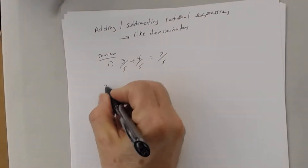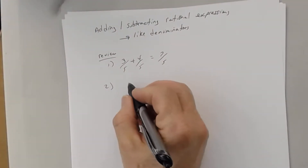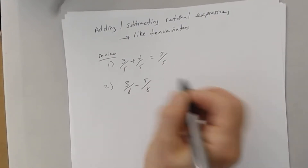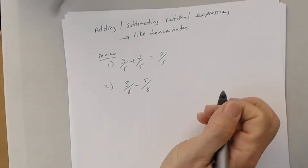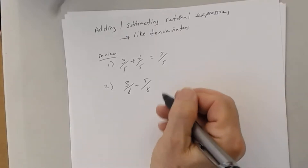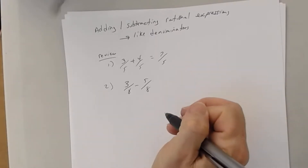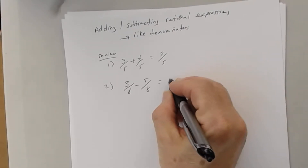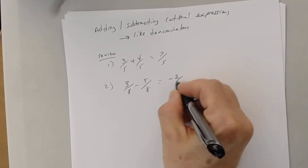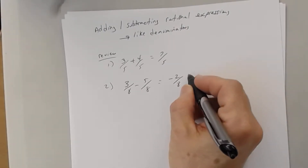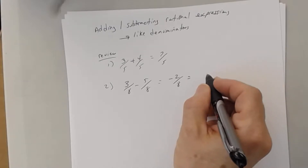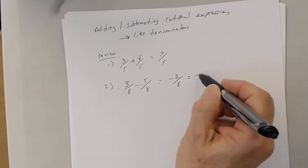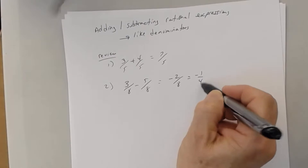Same thing with subtraction. When you subtract 3 eighths minus 5 eighths, you're subtracting 5 eighths from 3 eighths, so what do you end up with? Negative 2 eighths - which reduced is negative 1 fourth.